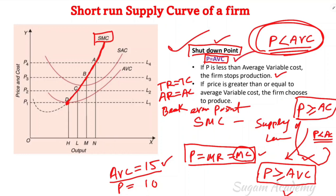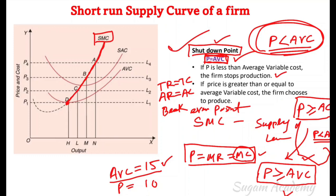Price is equal to average variable cost — this is the shutdown point. The break-even point is where price is equal to average cost. So shutdown point: price equals average variable cost. This is about the short-run supply curve of a competitive firm. I hope this class was helpful. If the class is helpful, please like, share and subscribe. Have a good day. Thank you.